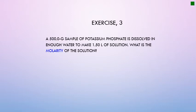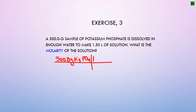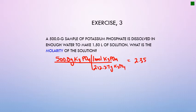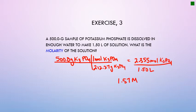Next example — slightly more difficult: 500.0 grams of potassium phosphate, K₃PO₄, in 1.5 liters of solution. First convert grams to moles: molar mass of K₃PO₄ is 212.27 g/mol, so 500.0 g ÷ 212.27 g/mol = 2.355 moles. Then divide by 1.50 L: concentration = 2.355 ÷ 1.50 = 1.57 M.